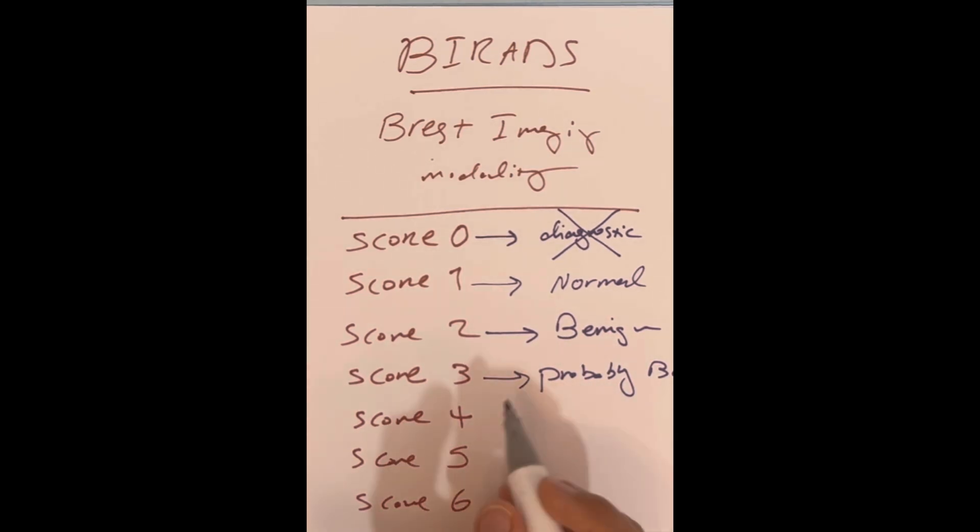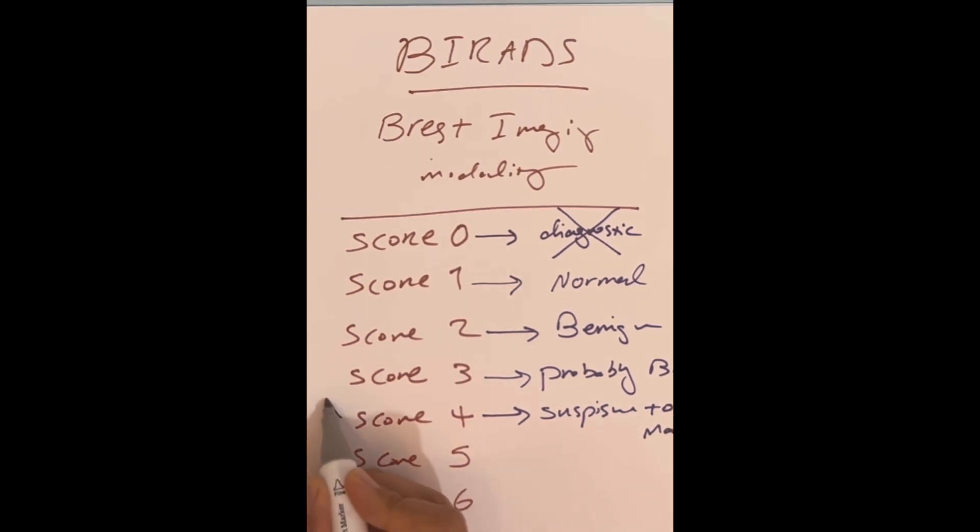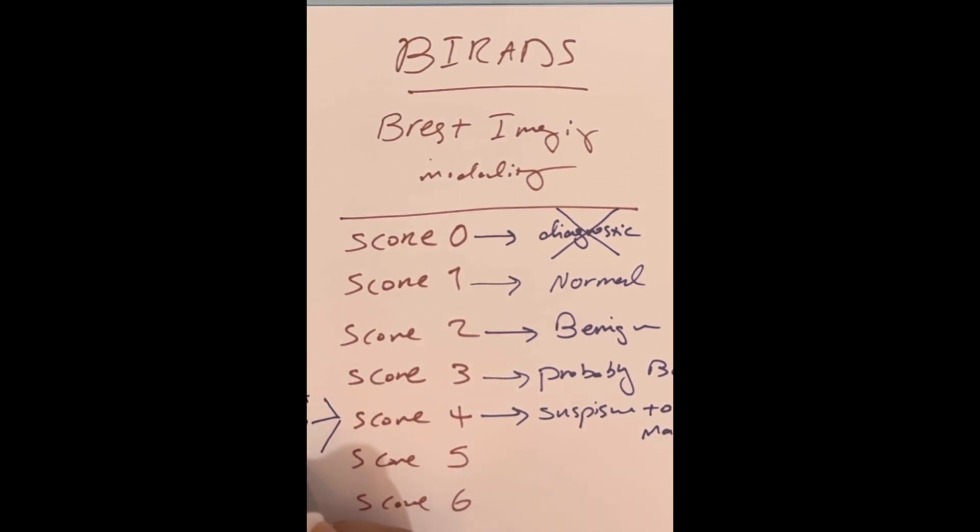Score 4 means it is suspicious for malignancy or probably malignant. It divides into Score 4A, 4B, and 4C. Score 4A is similar to Score 3, and Score 4C is similar to Score 5. This is a very important score in BI-RADS scoring.